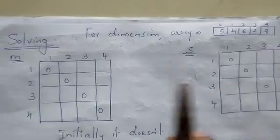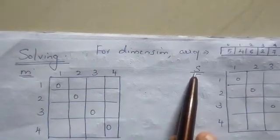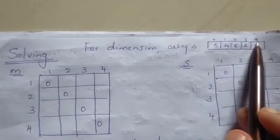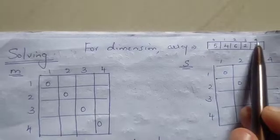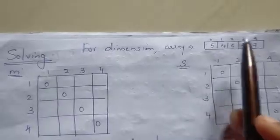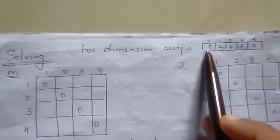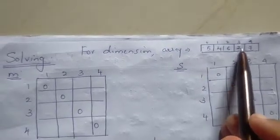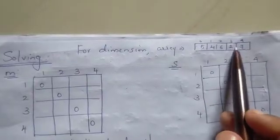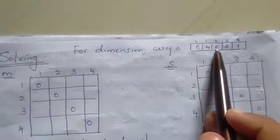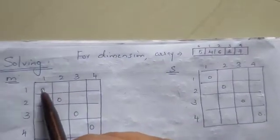We have 4 nodes. We have 4 dimensions: 5x4, 4x6, 6x2, 2x7. So initially we set up the table for the matrices A1, A2, A3, A4 with these dimensions.